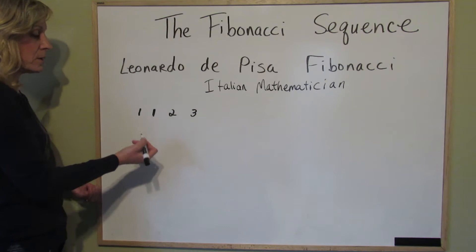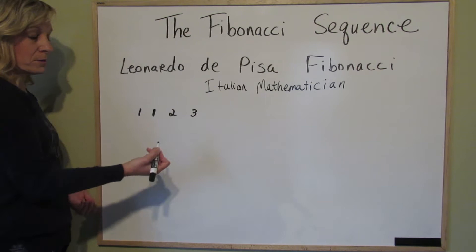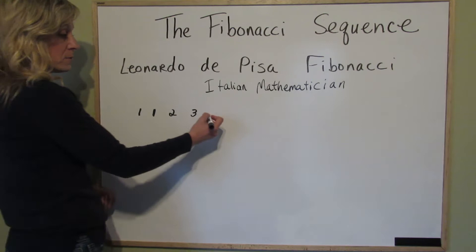1 plus 1 is 2. 1 plus 2 is 3. So you can think — what would the next number be? Well, we're going to add the next two preceding numbers. So 2 plus 3 is 5.